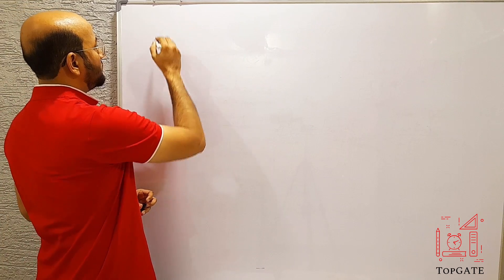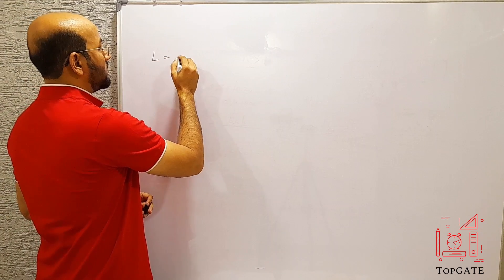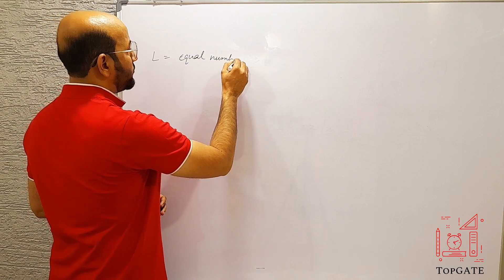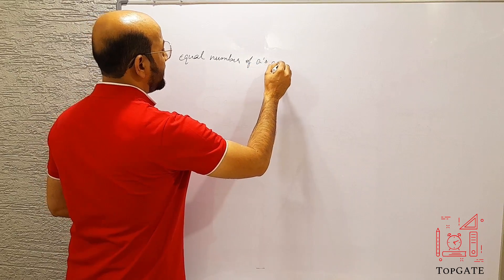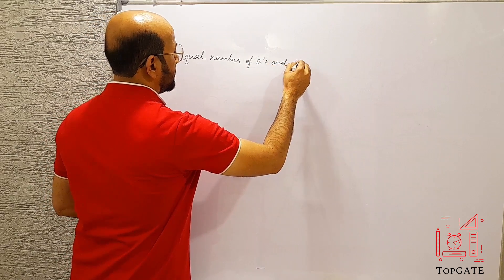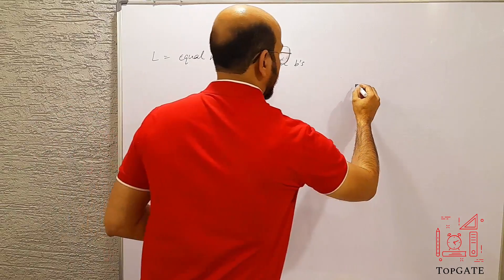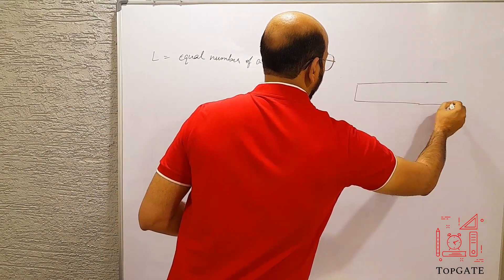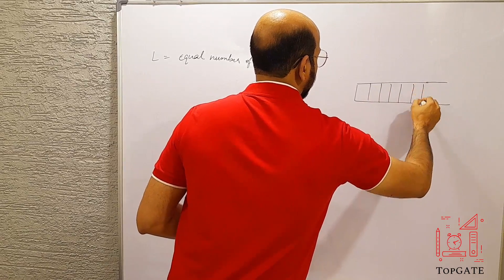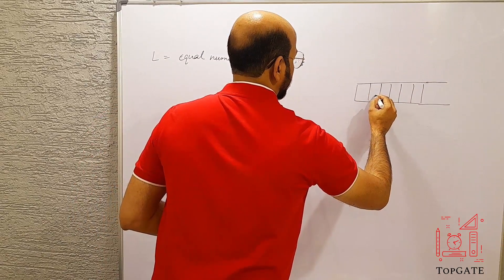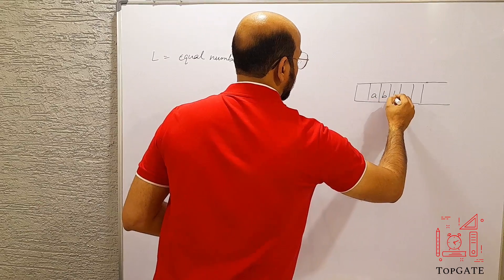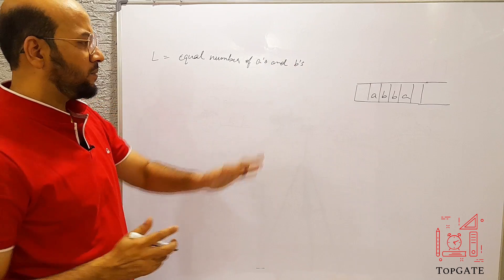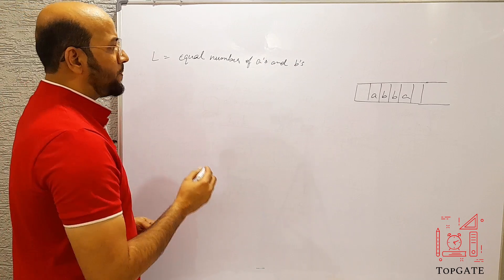The language here is L = {strings with equal number of A's and B's}. I'll design an input tape. Suppose we take the string A B B A — in this string we have two A's and two B's. Any such string can come here.